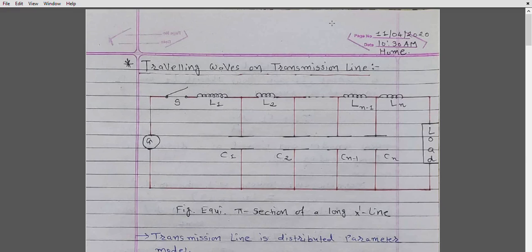Now let us discuss traveling waves on a transmission line. A transmission line is a distributed parameter circuit, and the feature of such a circuit is its ability to support traveling waves of voltage and current. A circuit with distributed parameters has a finite velocity of electromagnetic field propagation. Changes in voltage and current due to switching and lightning do not occur simultaneously in all parts of the circuit, but spread in the form of a traveling wave or traveling surge.